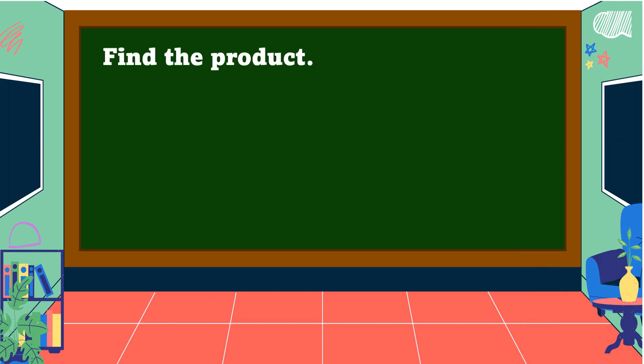To understand the steps, let's study some examples. Find the product: four-fifths times two and one-half. First, we're going to change the mixed fraction into an improper fraction. It is very easy — we're going to multiply the whole number by the denominator of the fraction.